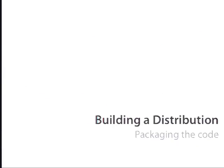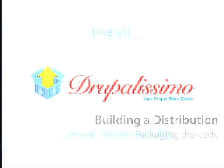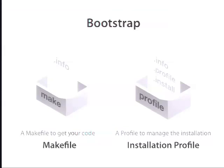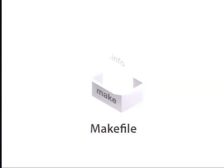Now let's start to build the distribution. A distribution is a product, so you must think about the name, give it a logo, and start to package content together. We'll use our example distribution called Drupalissimo. To bootstrap the project you need two things: fetch code from different locations to make the code base, and an installation profile to manage the installation process. For the first, we use a make file.